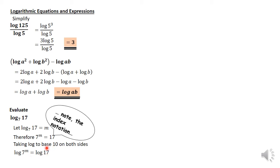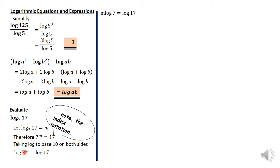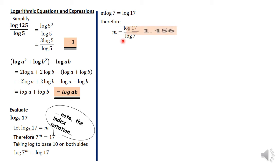These are logs to base 10, since no base is written. We move the m from being a power of 7 so the expression becomes m log 7 is equal to log 17. Dividing both sides by log 7, you have m equals log 17 divided by log 7. Remember, m was the term log base 7 of 17. Therefore, if we get the value of m, that will be the solution, and the answer is simply 1.456.